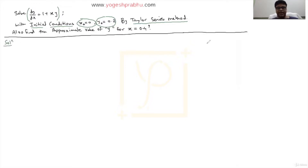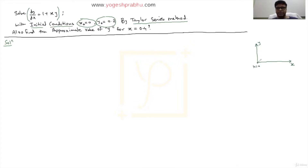When we write dy/dx, x is the independent variable and y is the dependent variable. We know that when x is equal to 0, the value of y is 0.2. That is one condition already given to us, and for the Taylor series method we can make use of this condition to solve the problem.